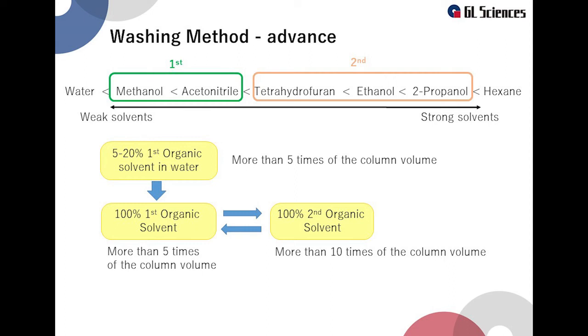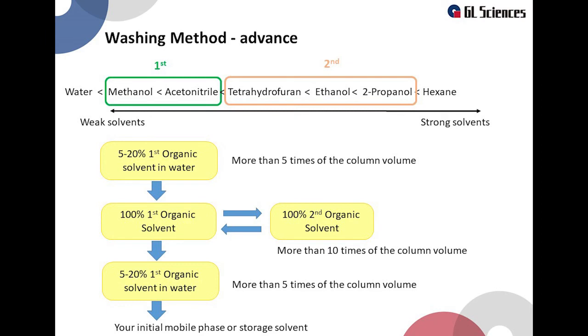Then return to the 100% organic solvent of the first choice. Run this again with 5 times the column volume. Then return to the mixture of organic solvent and water, and let it flow for at least 5 times the column volume. After that, use the column under the usual analytical conditions and check whether the column has recovered or not.